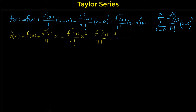So this is the formula for the Maclaurin series. The Maclaurin series is a special case of the Taylor series, and in sigma form we can write the Maclaurin series as: sigma from n equals 0 to infinity of the nth derivative at 0 over n factorial times x to the power of n.